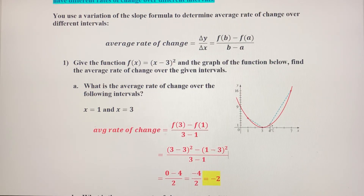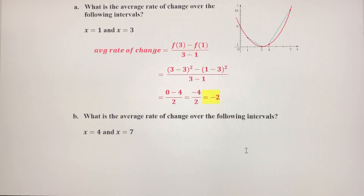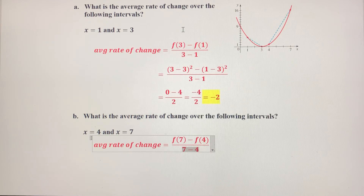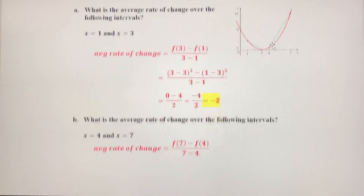Basically, we're finding the slope of this blue dotted line from the interval 1 to 3, so it makes sense that the rate of change is negative because the function is decreasing there. Now we're going to do from 4 to 7. From 4 to 7 we're increasing, so our slope should be positive and steeper than negative 2. Average rate of change is going to be f(7) minus f(4) over 7 minus 4. We're still using the given function f(x) = (x − 3)².